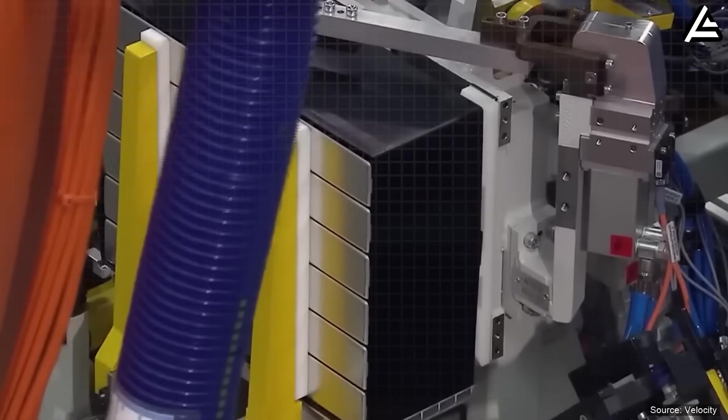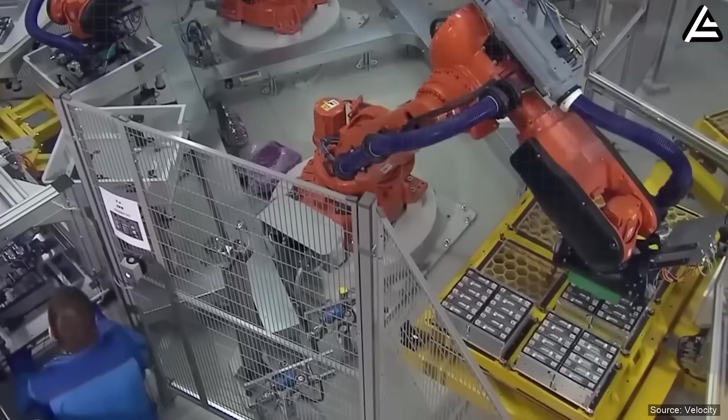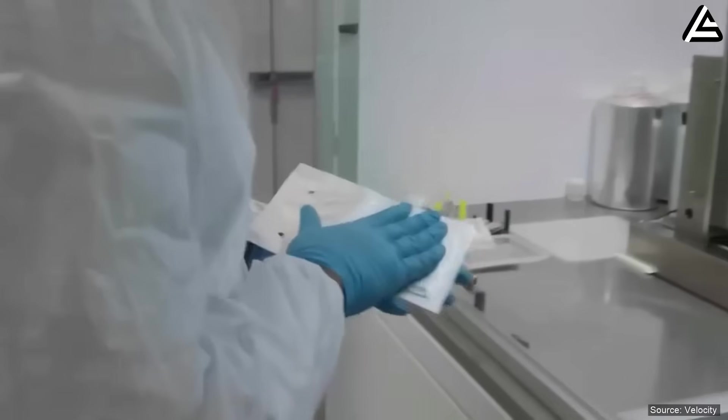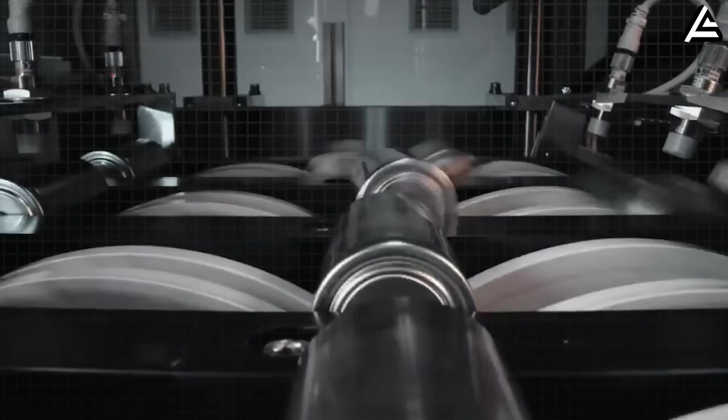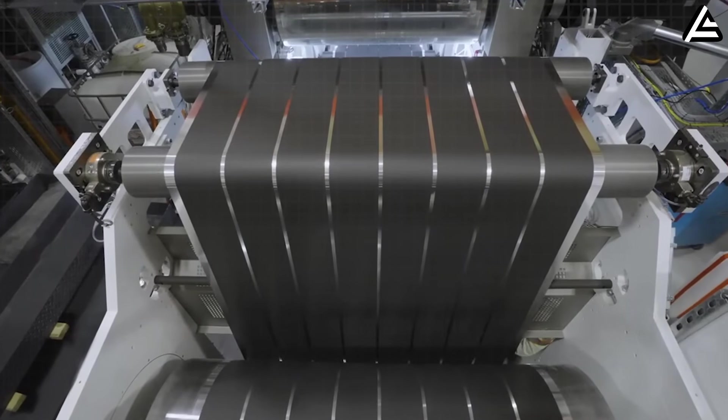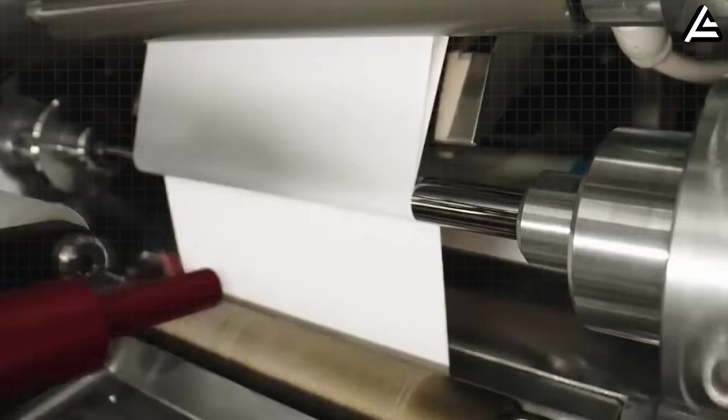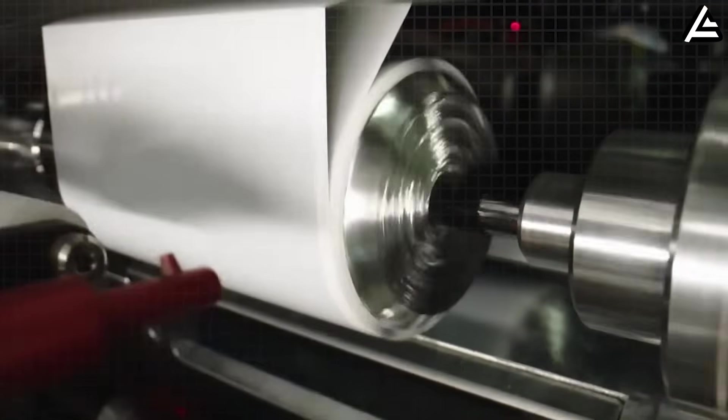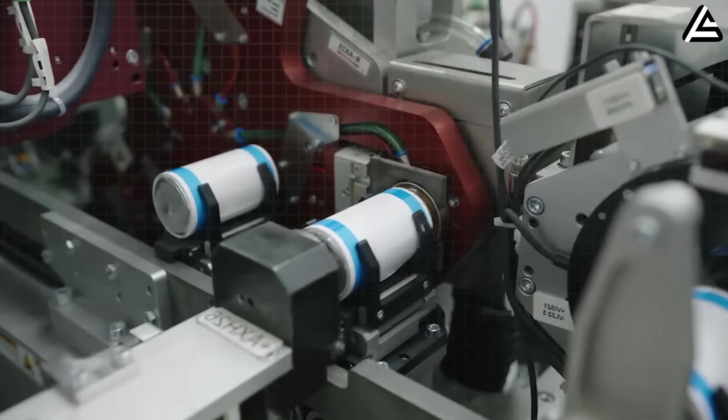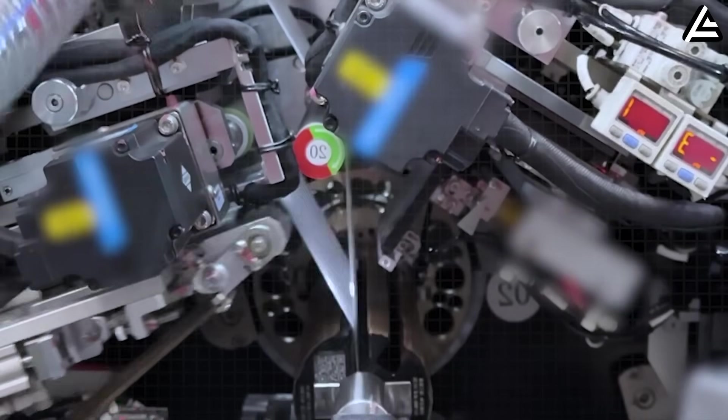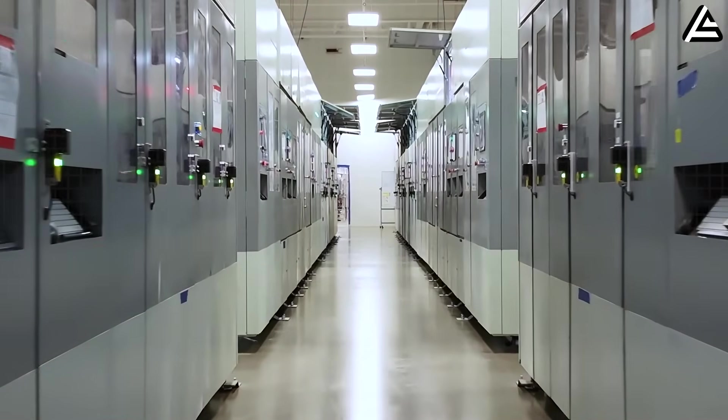What makes Tesla's approach especially disruptive is its manufacturing-first strategy. Instead of developing an entirely new form factor or specialized tooling like Toyota or Solid Power, Tesla has engineered these solid-state layers to integrate directly into the existing 4680 production line. The dry electrode coating process remains compatible with the new chemistry, and the laminated solid electrolyte can be roll-pressed in a manner similar to traditional separators. This approach preserves the mechanical and thermal advantages of the 4680 casing while reducing capital expenditure by an estimated 40 to 60 percent compared with building a completely new production facility.